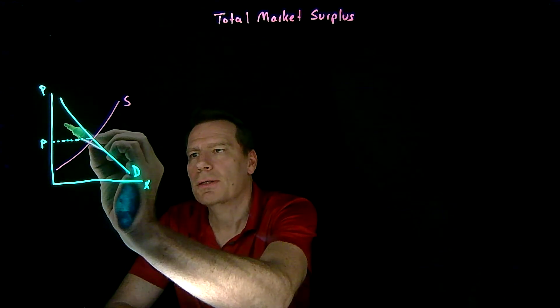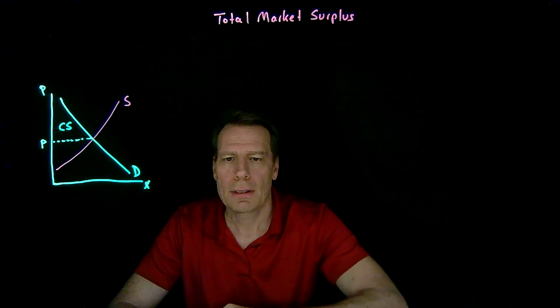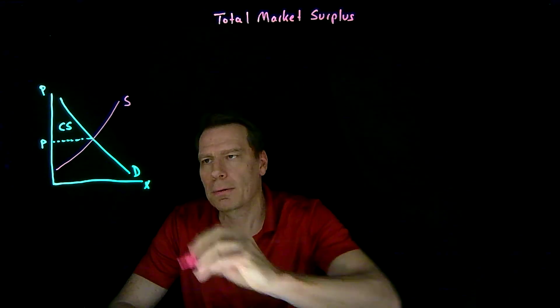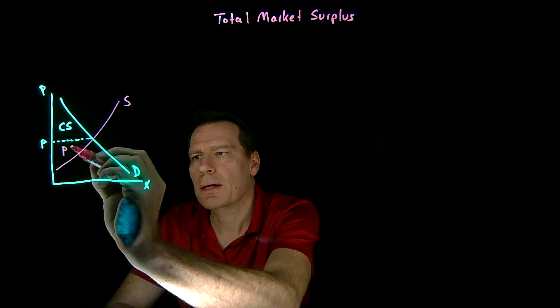So that creates consumer surplus here. And firms get the surplus below the price down to the supply curve, or producer surplus area.